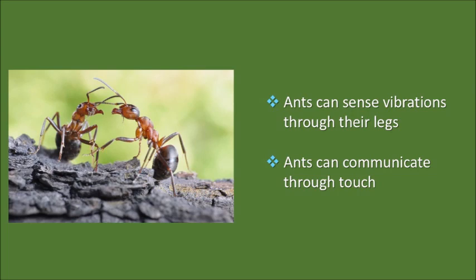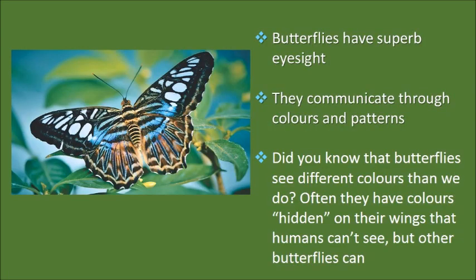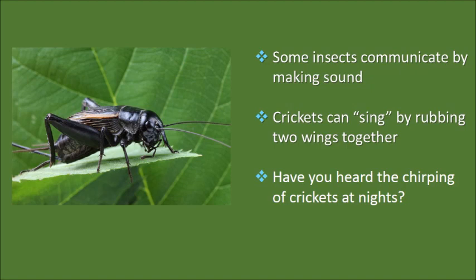The next insect is the beautiful butterfly. Butterflies have very bright colors, and this color itself is a way they communicate. Interestingly, the way we see the colors is not the way a butterfly sees them — within the wings there are hidden colors that only another butterfly can see. Butterflies have superb eyesight because they need to see these colors, and they communicate via the colors generated in their wings.